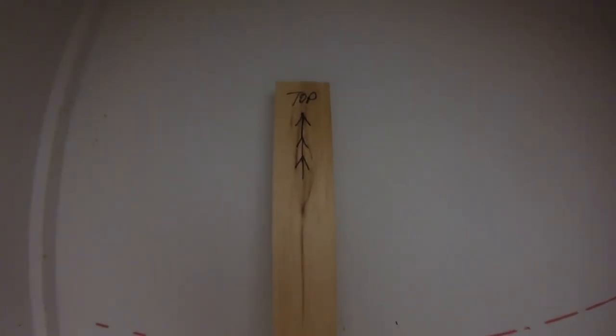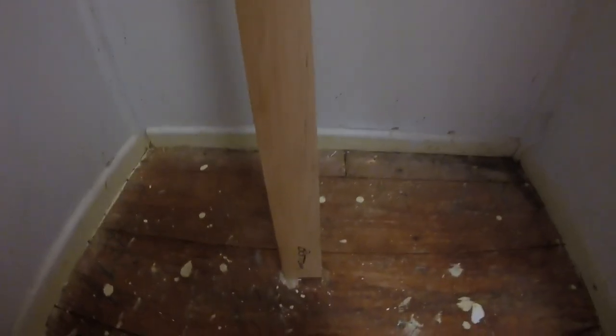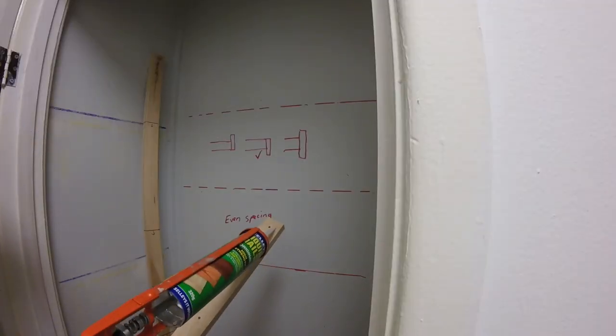The replacement shelves will be in new positions and I have created a story stick on which I've marked a series of lines corresponding to the top of each shelf support. Always good to mark the top and bottom on the stick and as a further reference I've drawn an arrow down from each line to remind me that the support goes below the line.